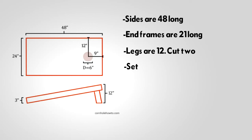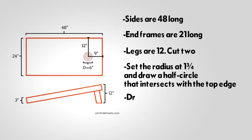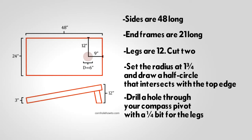Cut two. Set the radius at 1 and 3 quarter inch and draw a half circle that intersects with the top edge. Drill a hole through your compass pivot with a quarter inch bit for the legs.